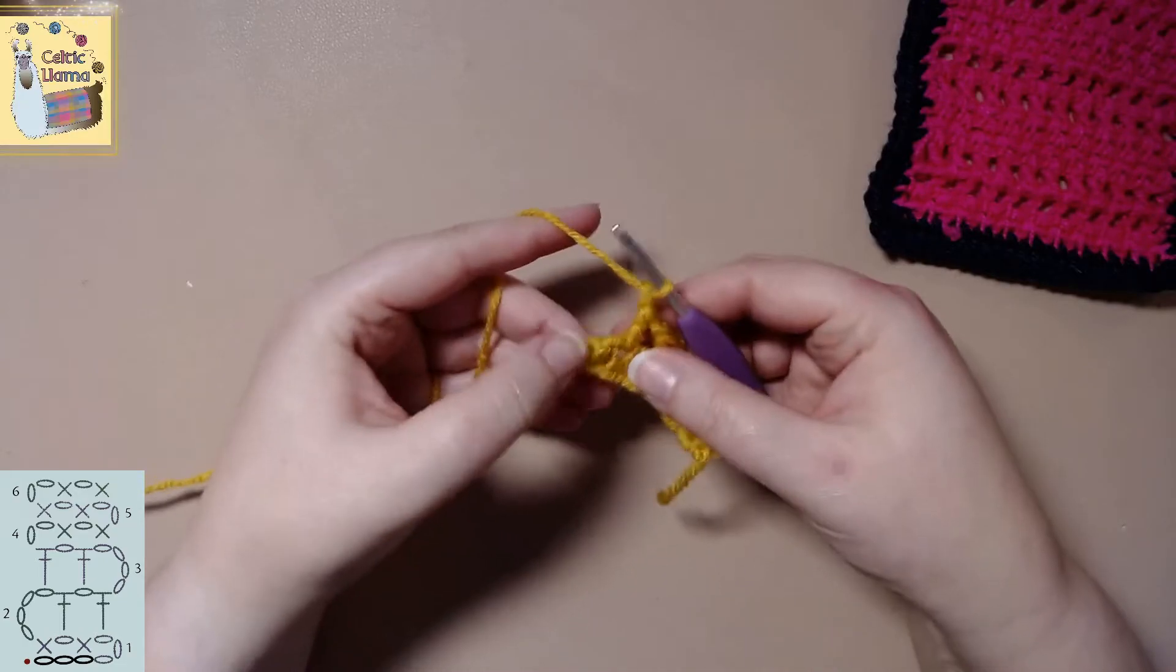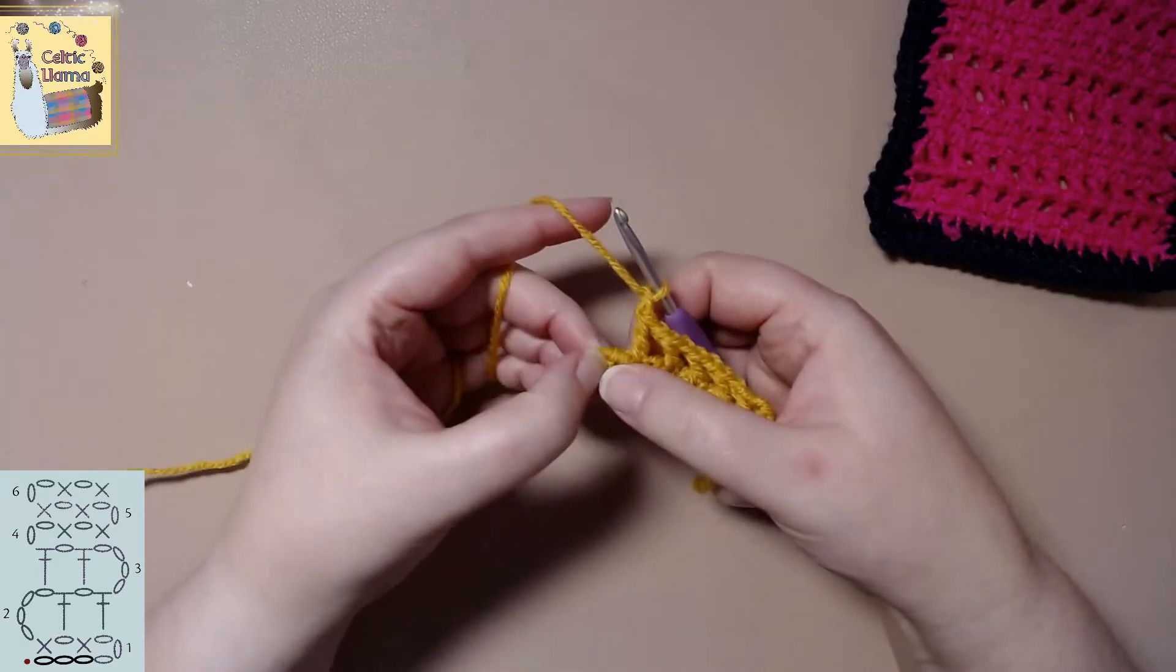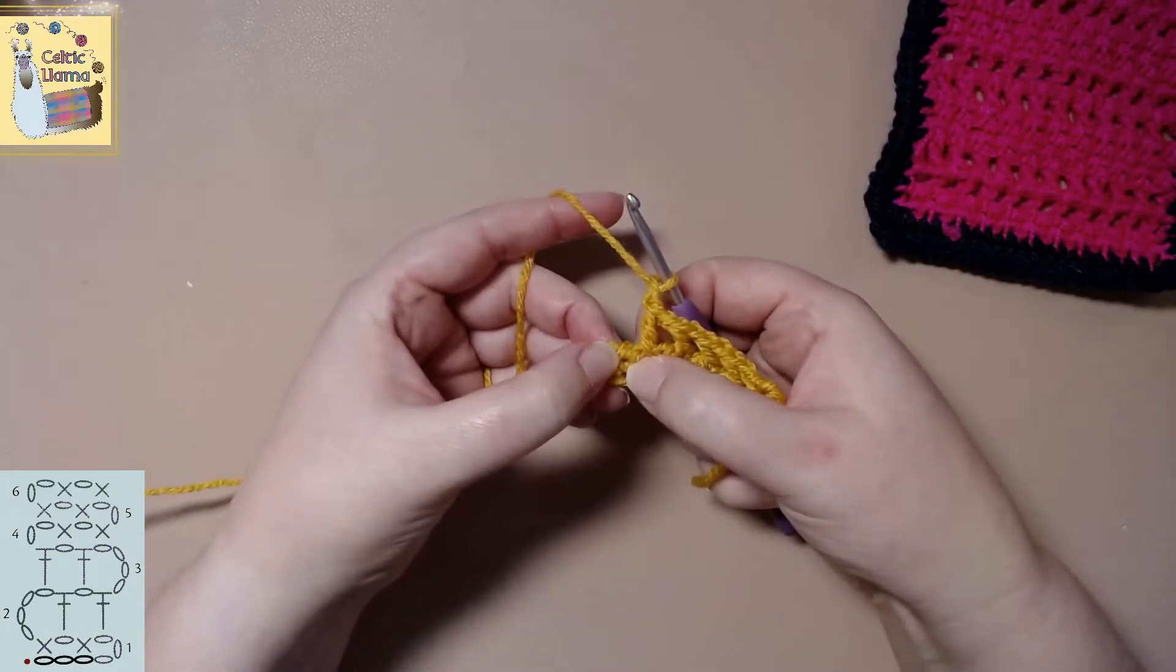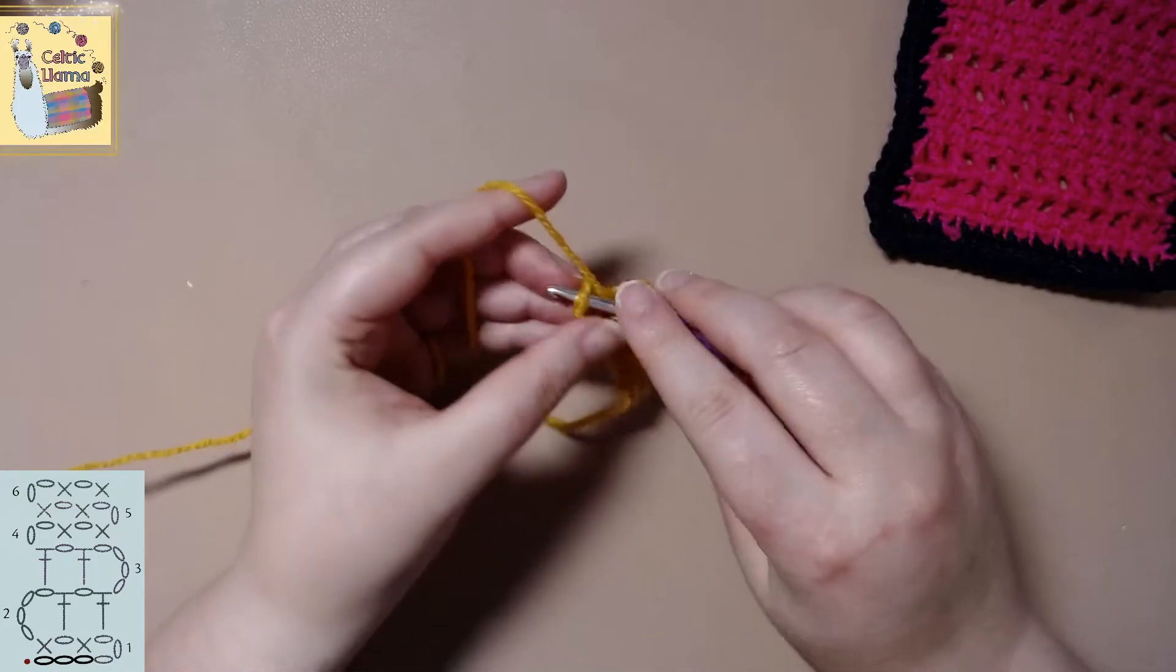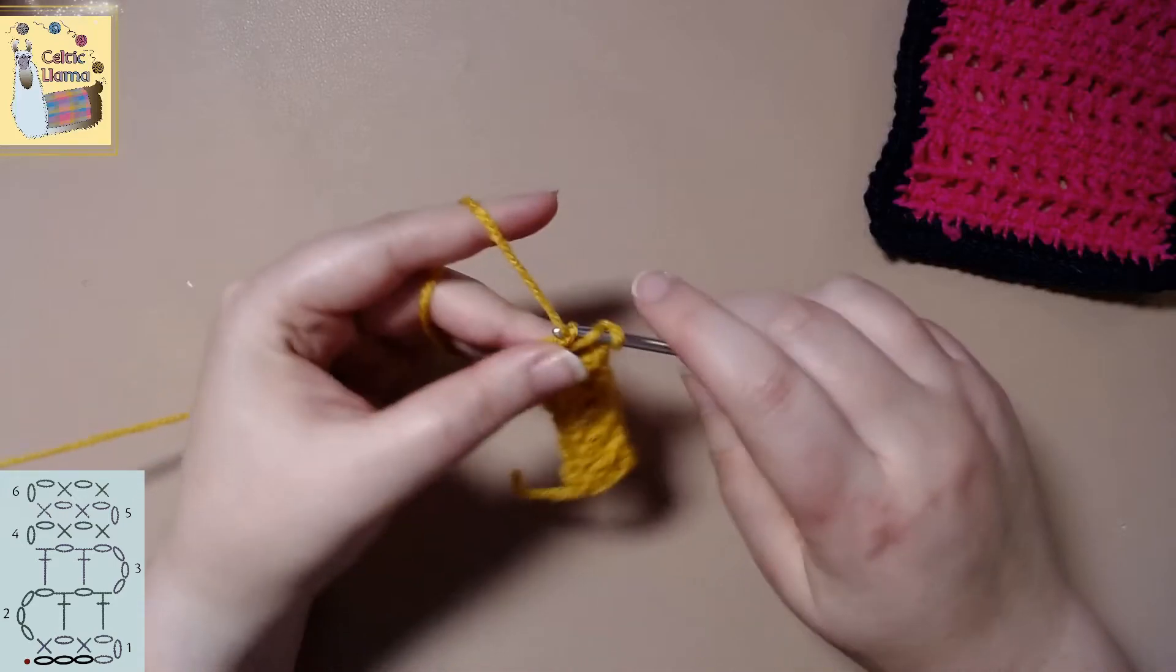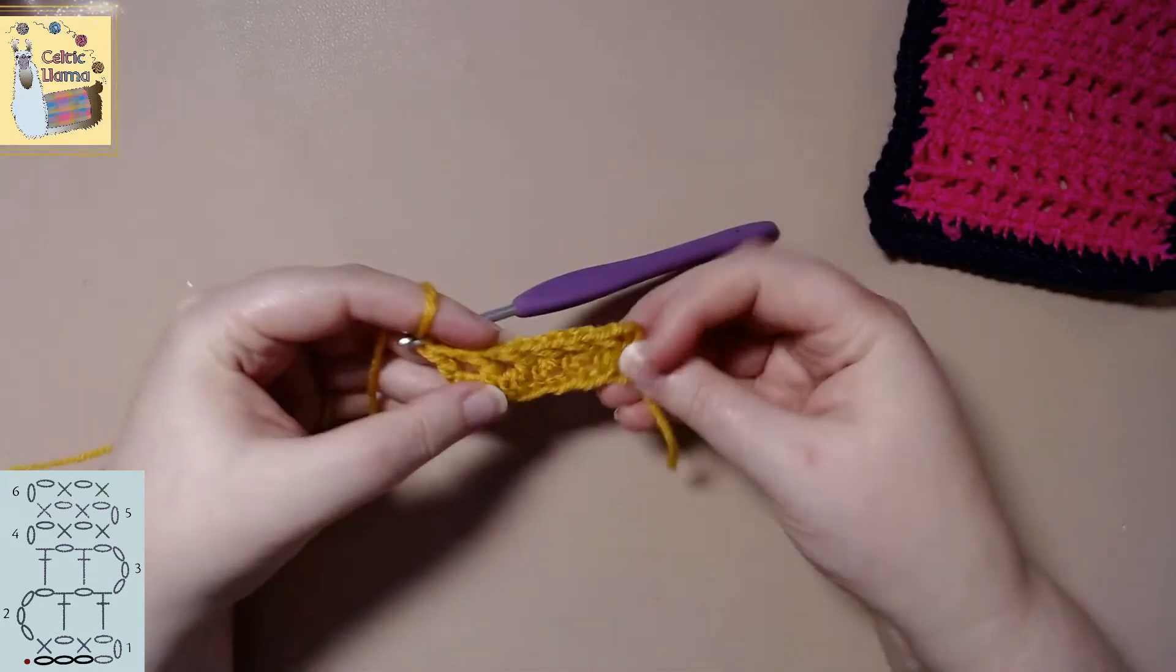Now on the last stitch what I like to do is instead of going right into that chain one space, I'm going to actually do my last double crochet in the chain wall. And that's just to give your project a nice smoother edge.